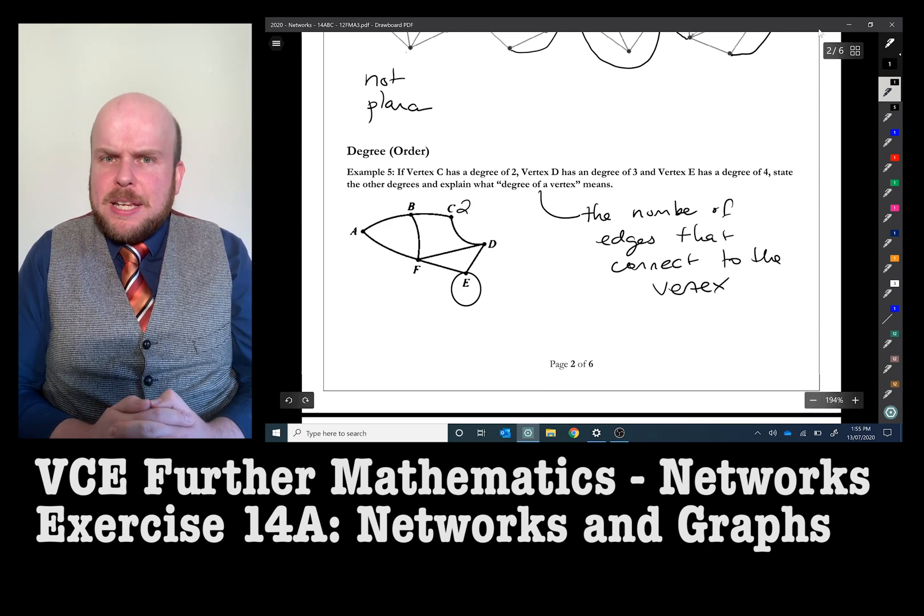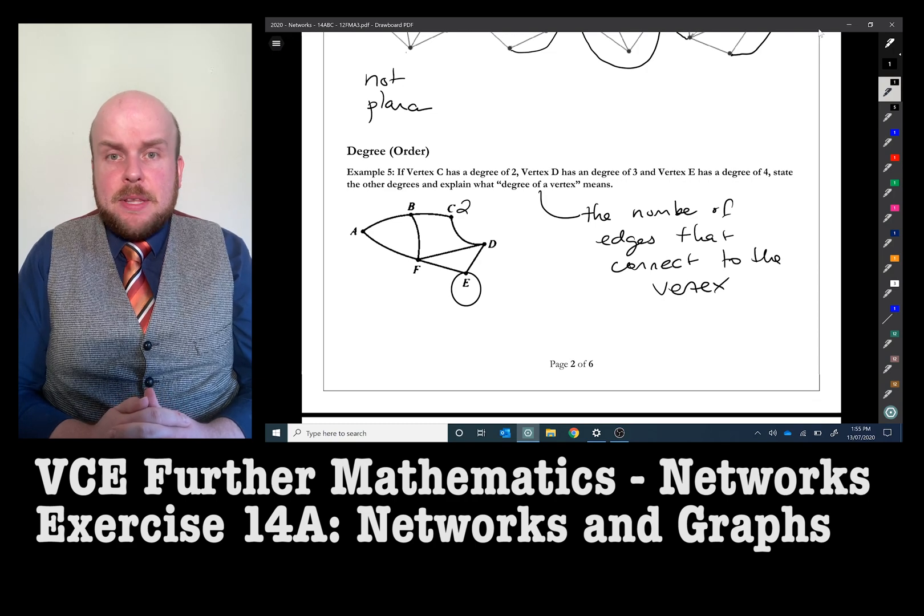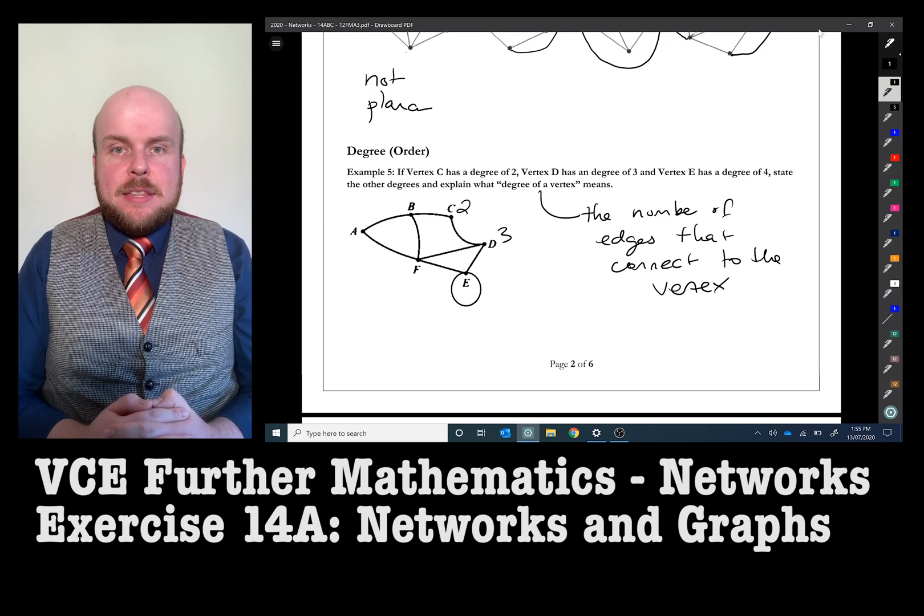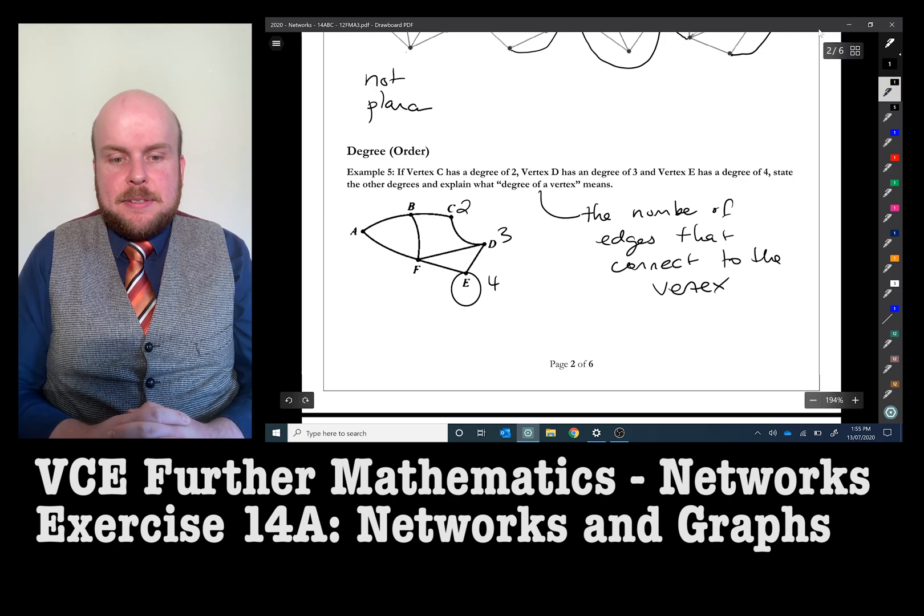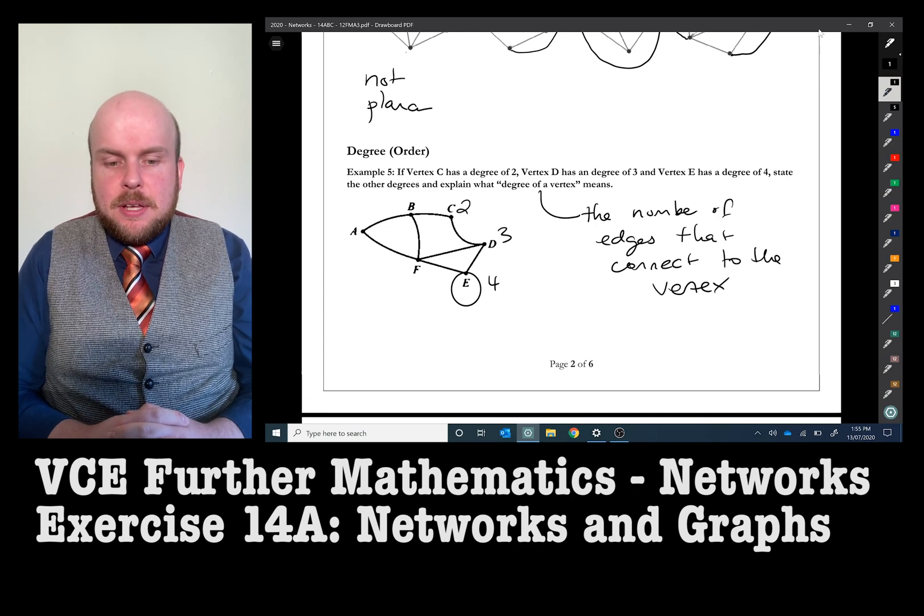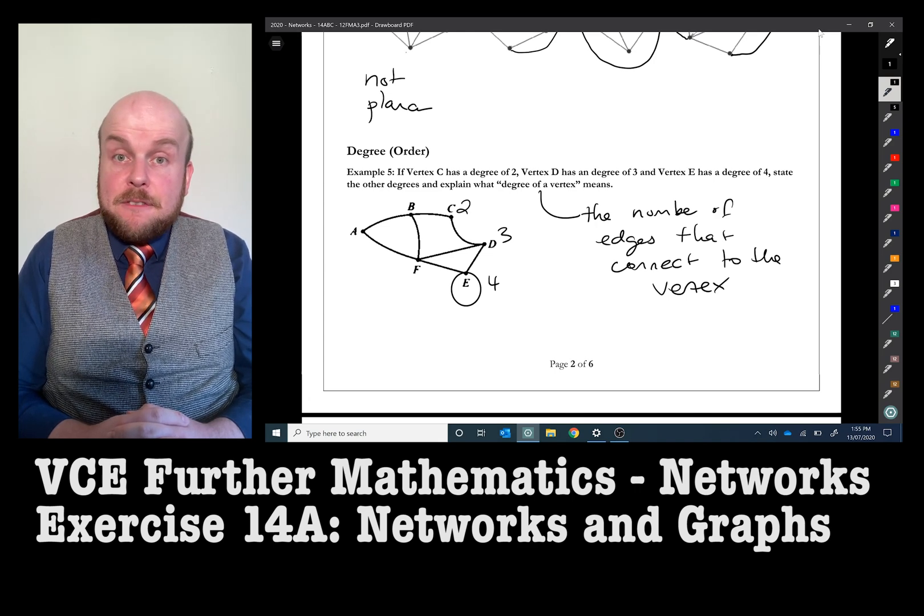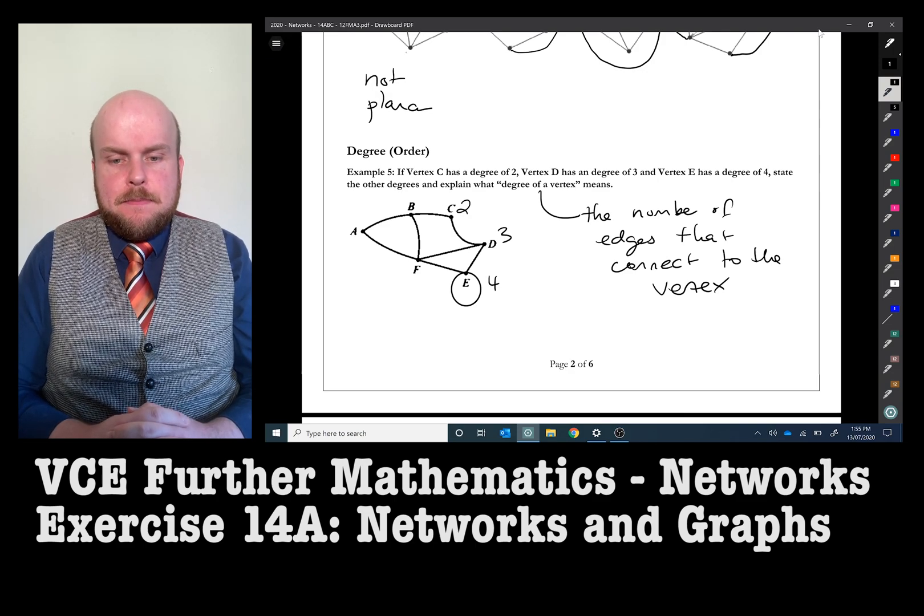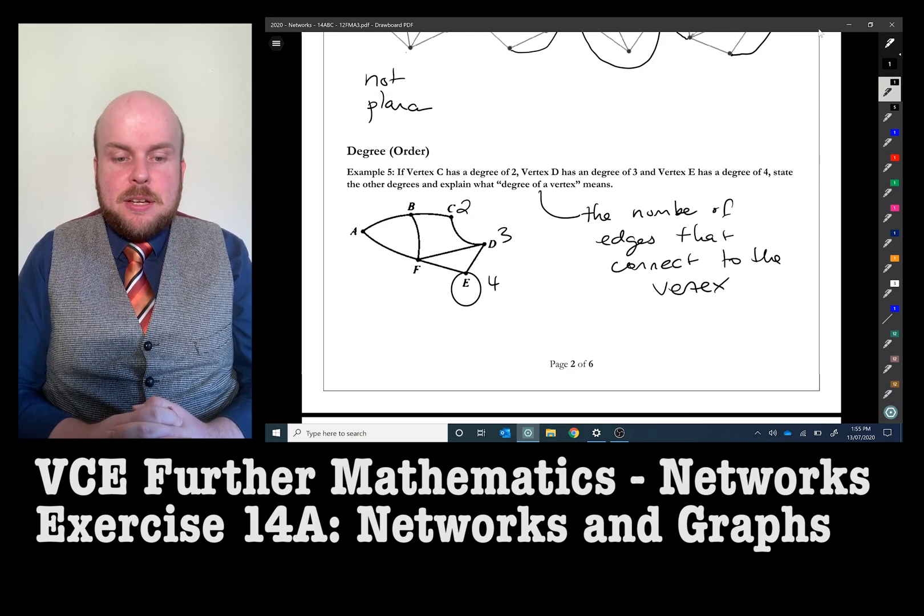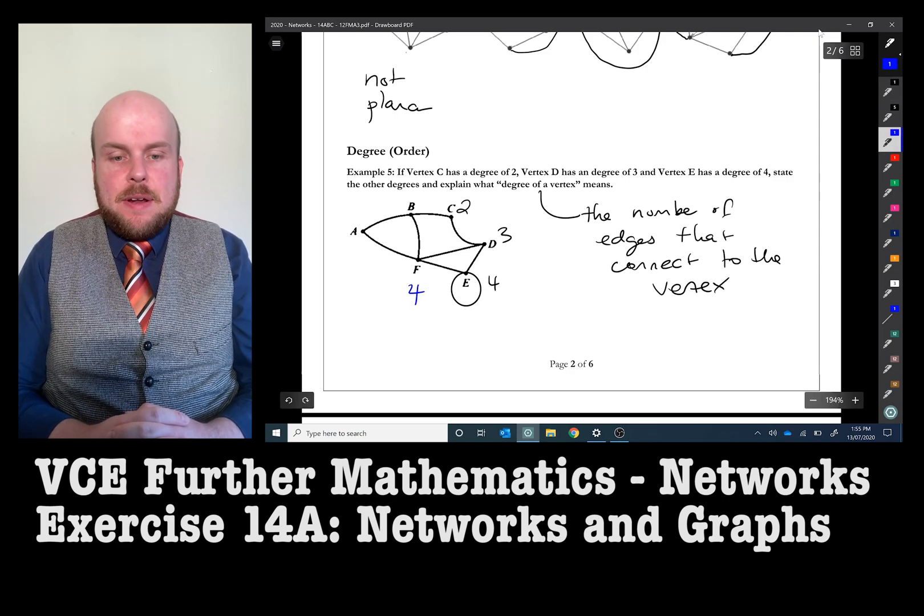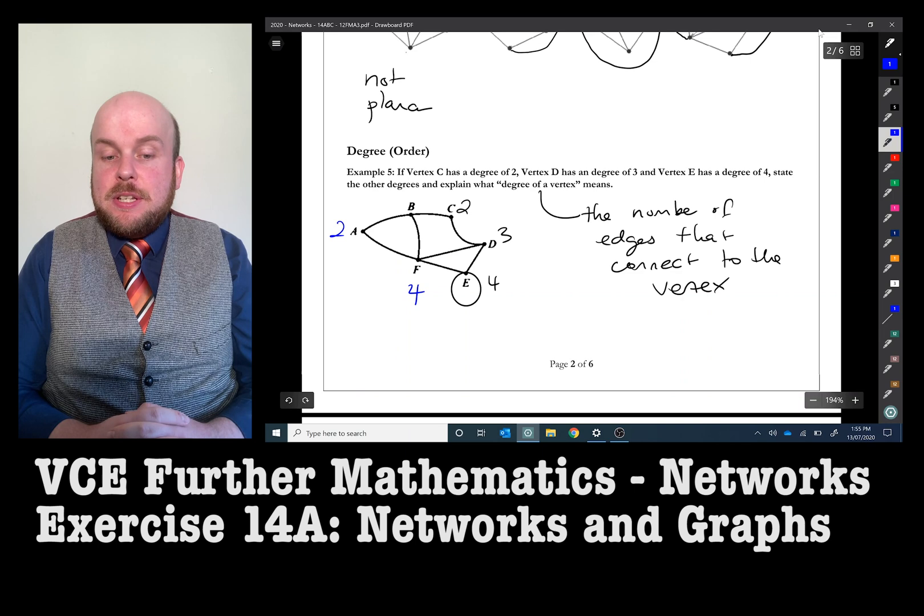So, what is the category? Well, the category has to be how many times or how many entranceways, if you like, are there to that vertex. With E, it's got 4 entranceways because you can enter via the left of the loop or via the right of the loop. Therefore, by that logic, A should have a degree of 2, B should have a degree of 3, and F should have a degree of 4.